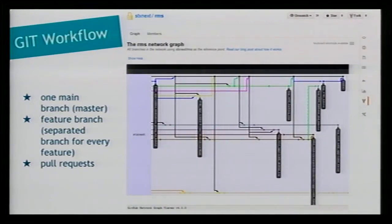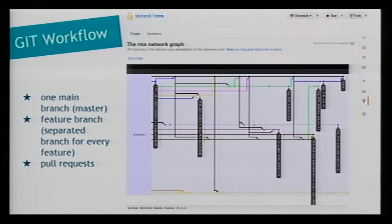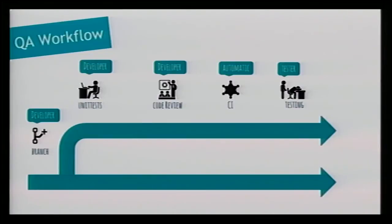Now the workflow - how it works. Starting with GitHub: code is there, we have just one main branch, the master. Each feature is developed on a new branch - we call it a feature branch - and when the feature is ready the developer creates a pull request. So in terms of branching strategy, nothing new here.